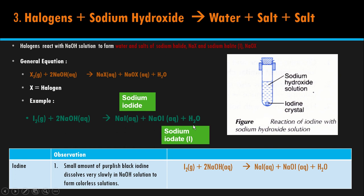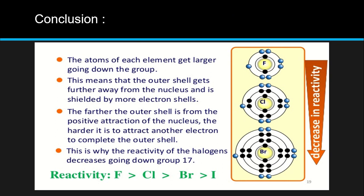Reactivity decreases going down the group. You kena explain menggunakan 5 poin: atomic size, distance, distance between nucleus and valence shell becomes further, attraction force between nucleus and valence shell becomes weaker, so it is harder for the atom to gain the electron. Bila dia harder, dia makin less reactive.